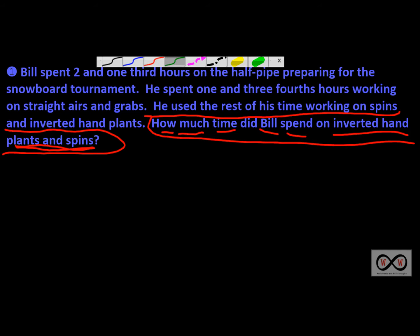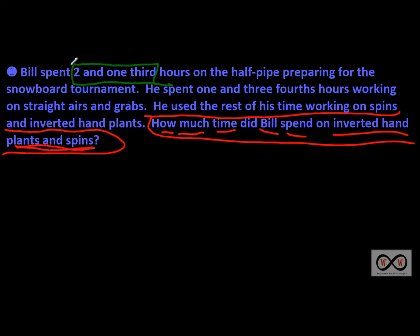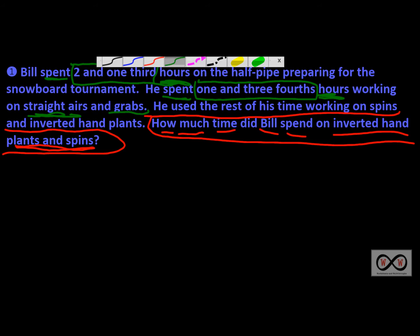First sentence: Bill spent two and one-third hours — that's our math clue right there — two and one-third hours, and there's our label, hours, on the half pipe preparing for the snowboard tournament. So that's how much he spent total preparing for the tournament. Next sentence: he spent one and three-fourths hours working on straight airs and grabs.